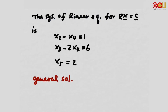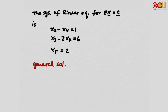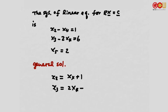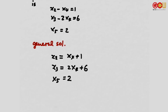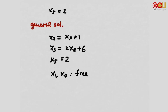Now we can write down the general solution. The general solution is: x2 = x4 + 1, x3 = 2·x4 + 6, x5 = 2, and x1 and x4 are free variables. So we call x2, x3, and x5 basic variables.